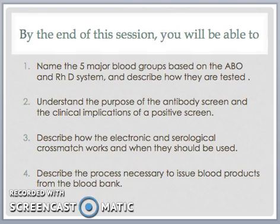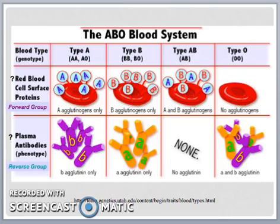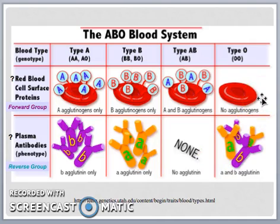Let's begin by looking at the ABO blood system and the Rhesus D antigen, which define an individual's blood type or group. Group A individuals express A antigen on their red cell surfaces and have naturally occurring antibodies against the B antigen, or anti-B, in their plasma. Conversely, individuals who are group B express the B antigen on the red cell surface and have naturally occurring antibodies against the A antigen, or anti-A, in their plasma. Individuals who are group O have neither A nor B antigen on the red cell surfaces and so they have naturally occurring anti-A and anti-B in their plasma.